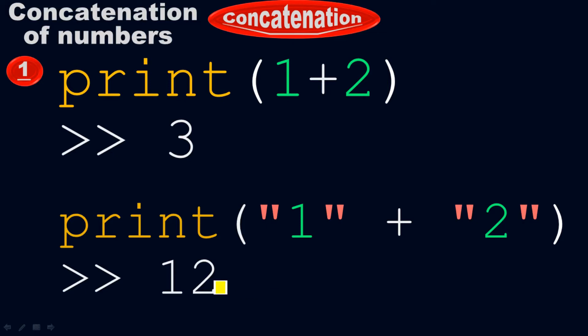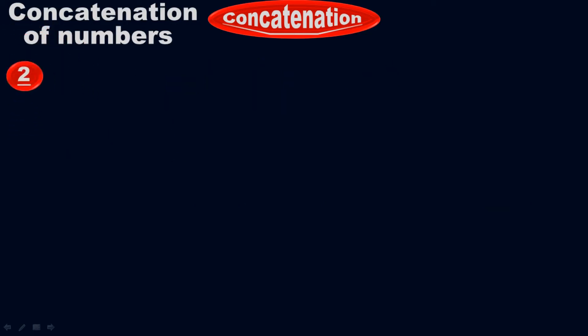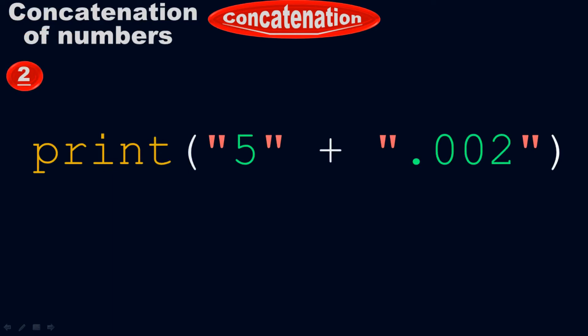It only happens when you enclose the number inside the quotes. Without quotes, you will not get 12. So make sure to enclose the number inside the quotes. Example number 2: print of 5 inside the quotes plus 0.002 inside the quotes — it equals to 5.002.